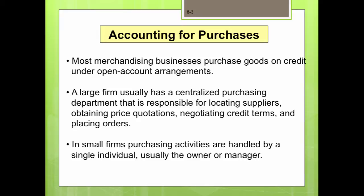In this chapter you will learn how Max Out Sporting Goods manages its purchase of goods for resale and its accounts payable. Most merchandising businesses purchase goods on credit under an open account arrangement. Usually large firms have a centralized purchasing department responsible for locating suppliers, obtaining price quotations, negotiating credit terms, and placing orders. However, in a small firm, purchasing activities are usually handled by a single individual, usually the owner or the manager.